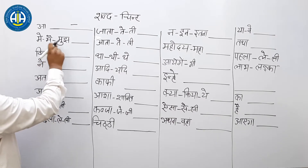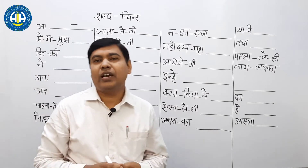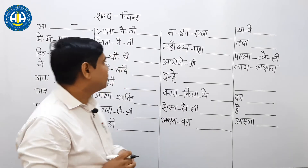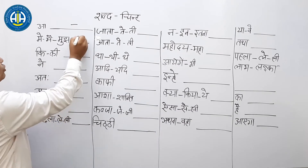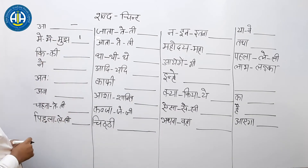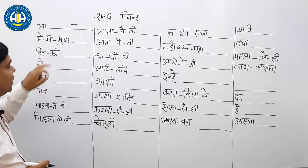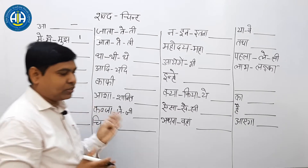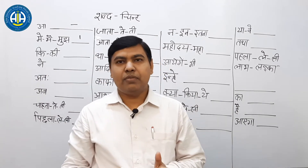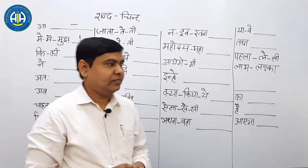मैं और मुझ — तीनों की outline 'ए' की है, जो आपको ध्यान देना है: line से ऊपर बनेगा और dark में बनेगा। फिर आता है 'की' और 'कि', यानि छोटा और बड़ा — दोनों का same outline है, आपको ये याद रखना है।